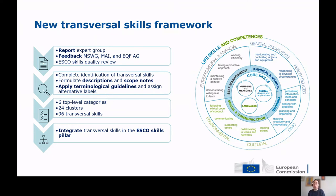Moreover, the updated transversal skills benefit from the results of the quality review of the ESCO skills pillar. The final result was a new model of transversal skills, which led to the identification of a new set of transversal skills terms, which were then developed with descriptions and scope notes based on the ESCO technological guidelines. The new model is a three-level model which includes six top-level categories: core skills, thinking skills, social and communication skills, self-management skills, physical and manual skills, and finally, the new category for life skills and competences.